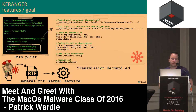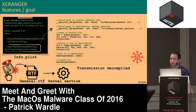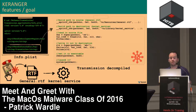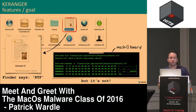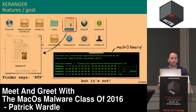If we analyze Key Ranger's code, we start by looking at the application bundle's info.plist file, which points to a binary called Transmission — the legitimate binary, but modified. At the beginning of its main function, extra injected instructions grab a file called general.rtf from the application bundle, save it as kernel_service, and then execute it. The general.rtf file appears to be a document, but if you run the file command or look at its hex bytes, it's actually a Mach-O binary executable.